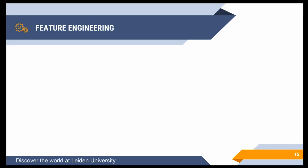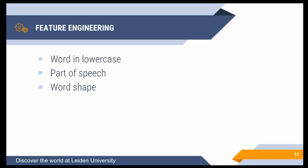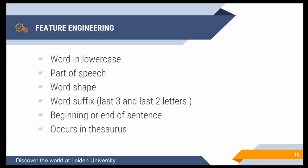The next step is creating features for the algorithm — attributes of words from which it can learn and predict future words. For my first experiment I used a fairly basic list: the word in lowercase, part of speech (noun or verb), word shape (uppercase, numbers, dashes), word suffix (last three and two letters), whether it's at the beginning or end of a sentence, and whether the word occurs in the Dutch archaeology thesaurus, the ABR. I also get all these features within a three-word window — looking at the word before and after the current word to get context information.